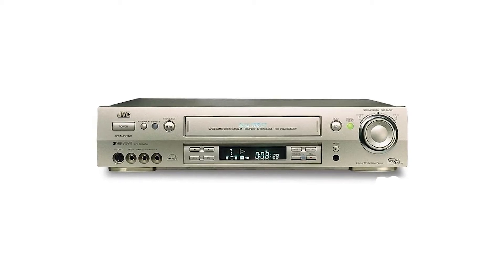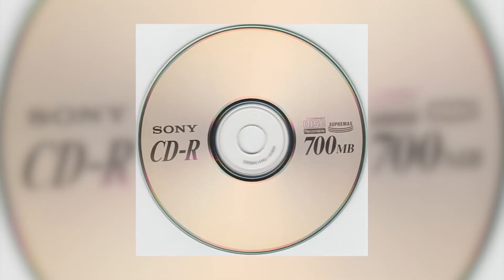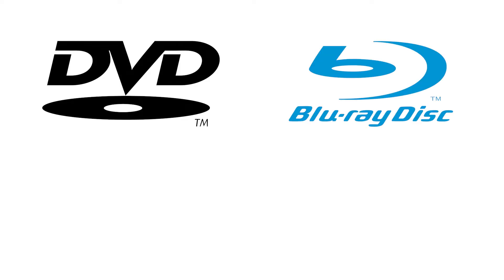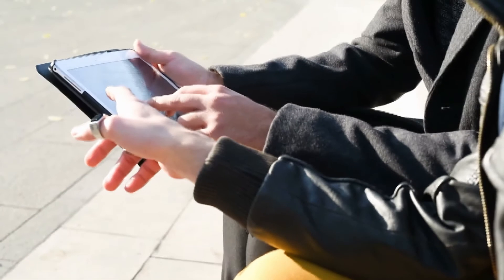JVC is the leader of the VHS tapes and players. Later, they disappeared the moment when the CD was invented. This was also then later replaced by the DVD, then the Blu-ray, and today we have Netflix to watch and re-watch movies.